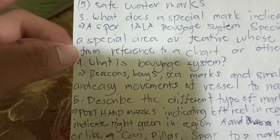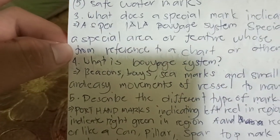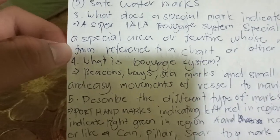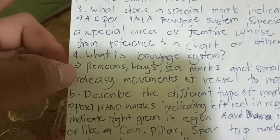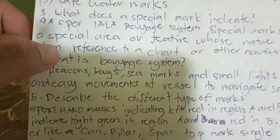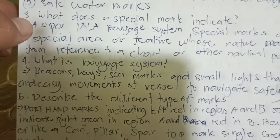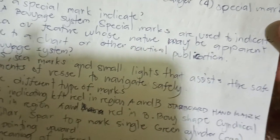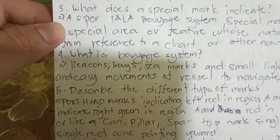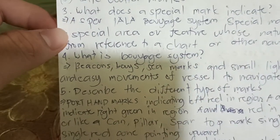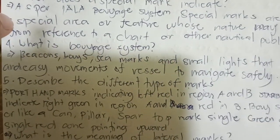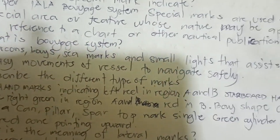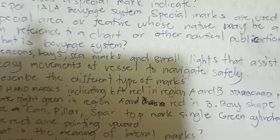Number four, what is the buoyage system? Beacons, buoys, sea marks, and small lights that assist the safe and easy movement of vessels to navigate safely.